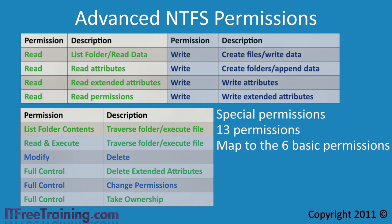When you select list folder contents, it includes all the permissions set when you select the basic read or write permission. The next basic permission is read and execute. When this basic permission is set, it applies all the advanced permissions above it on both the folder and file level, and adds the execute files permission when applied to files. The execute permission allows the user to run executable files. This does not include scripts and other files that are run by another program. If the file can be opened using the file open command from another program or dragged and dropped on a program to open it, then it is not an executable file.